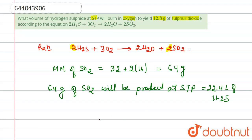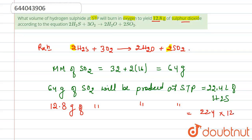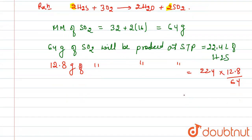Now, our question asks for 12.8 grams of SO₂. So for 12.8 grams of SO₂ produced at STP, the volume of H₂S will be: 22.4 multiplied by 12.8 divided by 64, which equals 4.48 liters.